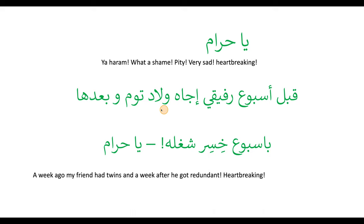Ya haram means what a shame or pity and is used when somebody hears something heartbreaking — it's like oh, ya haram. Example: A week ago, my friend had twins — ijaa wulaad tom. And then a week after, he lost his job. Ya haram — heartbreaking.